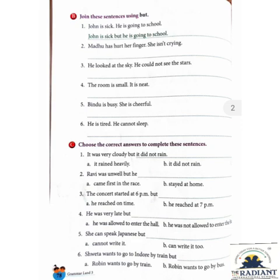Now children, Exercise C, page number 78: Choose the correct answers to complete these sentences. Two options are given — read the sentence and write the correct answer in the blank. Number 1 is already written: 'It was very cloudy but it did not rain.' Number 2: 'Ravi was unwell but he — A. came first in the race, or B. stayed at home.' The answer is: 'Ravi was unwell but he came first in the race.'